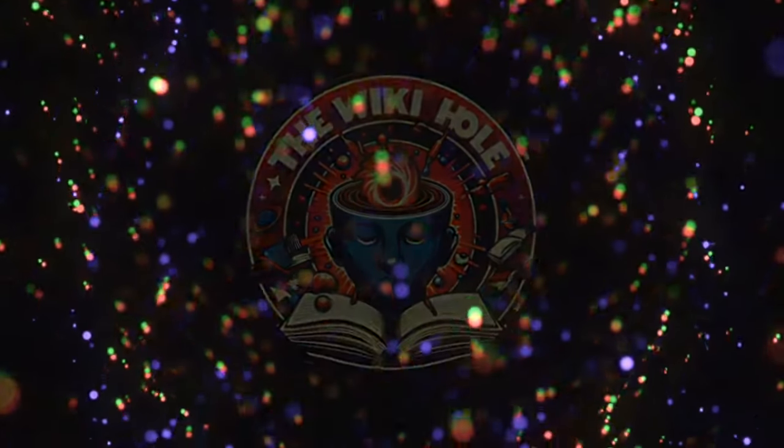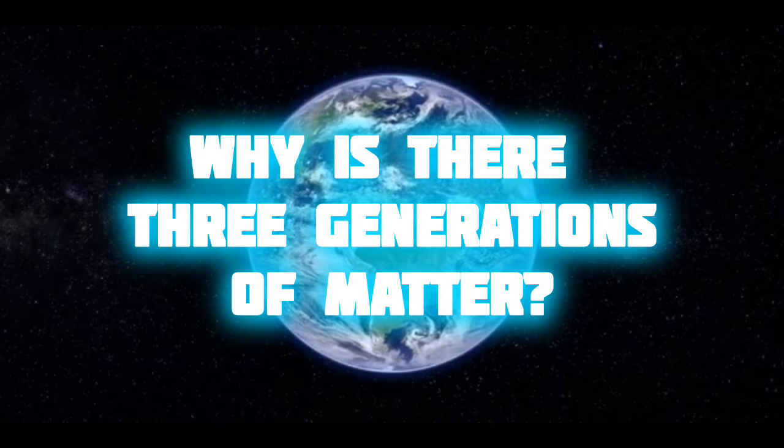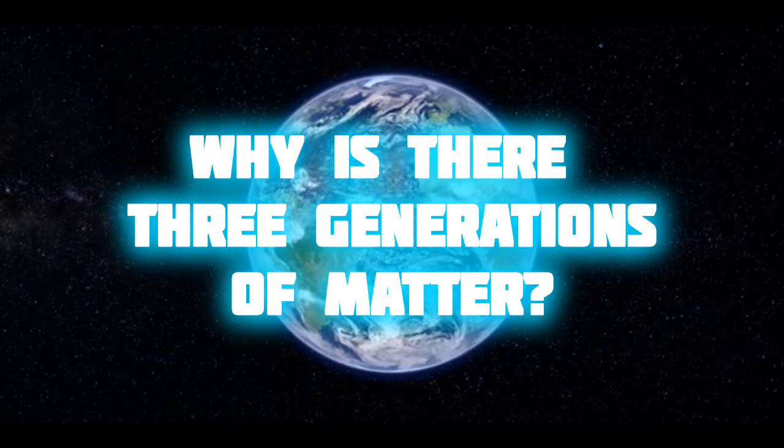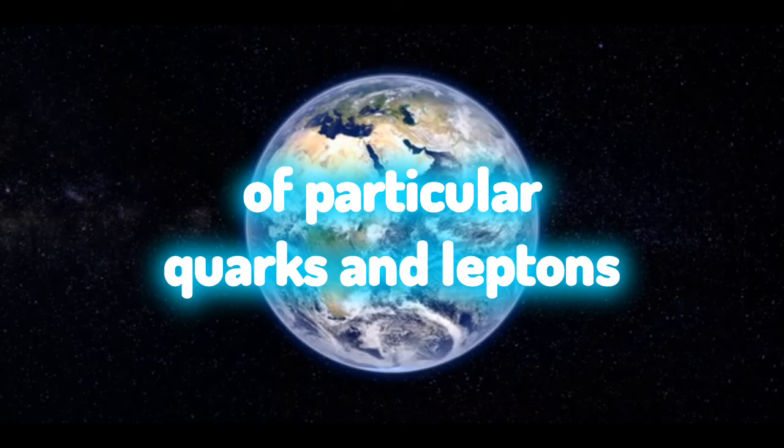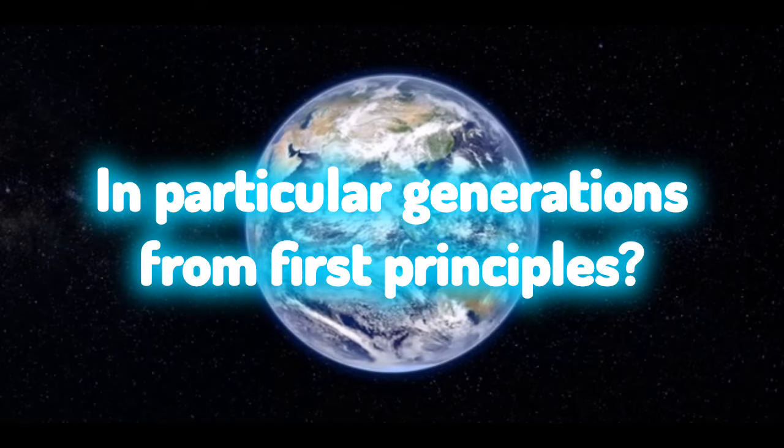Unsolved Problems in Physics: Why are there three generations of quarks and leptons? Is there a theory that can explain the masses of particular quarks and leptons in particular generations from first principles?